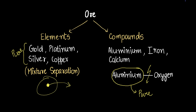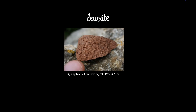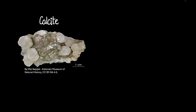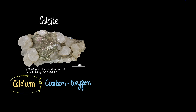An example is bauxite, which is an ore of aluminium — we extract aluminium from it. It's a compound of aluminium and oxygen, and it contains 55% aluminium, making it quite profitable to extract from. Another example is calcite, which is where we get our calcium from. Calcite is a compound of calcium, carbon, and oxygen. We break the bond to free up the calcium, and calcite contains 40% calcium.